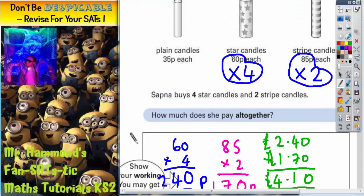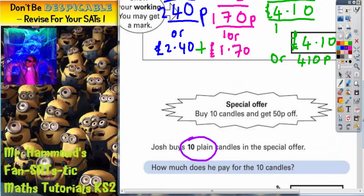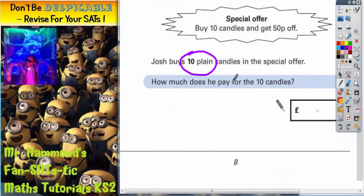So let's scroll up. So plain candles are 35p each. Plain candles are 35p each. He's having ten of them, so we need ten lots of 35p.